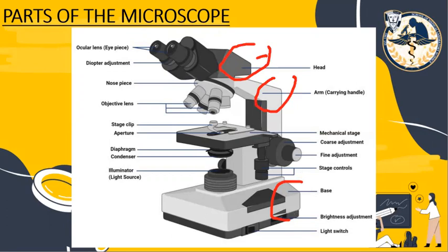For the optical parts of the microscope, the first is the ocular lens or eyepiece — this is the part that we look through, found on top of the microscope, with a standard magnification power of 10 times. We also have the diopter adjustment, which we can move to adjust and have a clearer magnification or clearer view of our specimen.